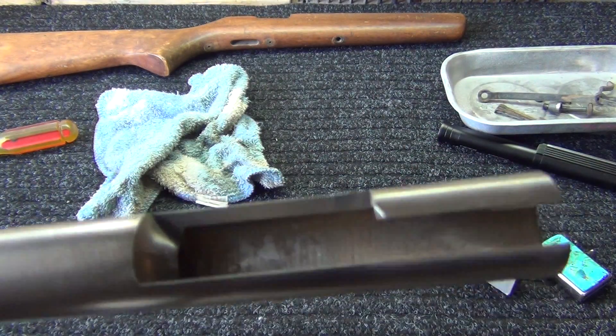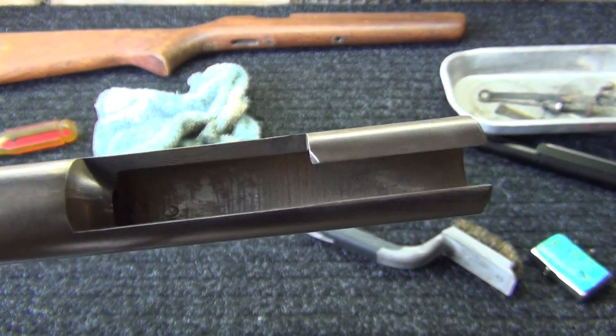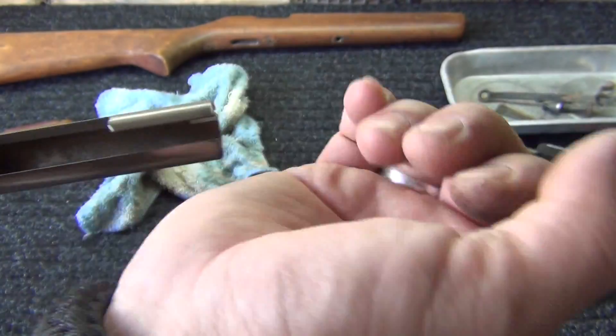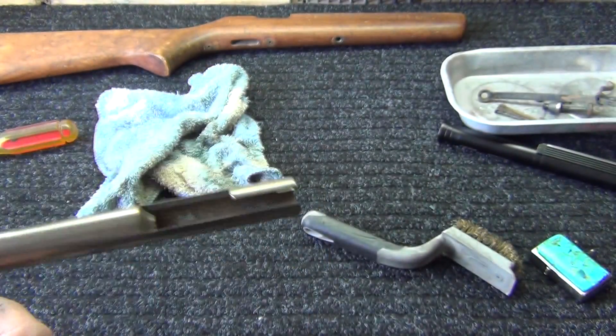There's still rust in there. It looks like rust that's just on the surface, and it just needs to be scrubbed out, which I'll do with a shotgun barrel cleaner.